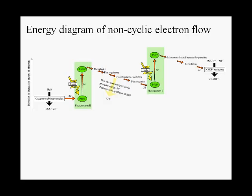Here is an energy diagram of non-cyclic electron flow, showing that light energy is used to boost electrons to higher energy states. Then the electron transport chain decreases in energy, and that is used to indirectly power ATP synthesis by generating a proton gradient. When electrons arrive at photosystem I, light boosts them to an even higher energy level — enough to reduce NADP+ to NADPH.